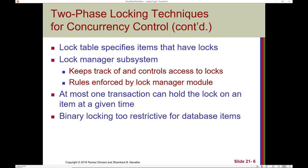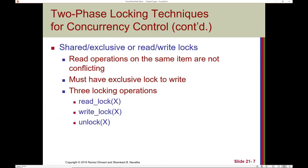Binary locking is too restrictive for database items, because if an item is locked it can't be accessed by anybody else. This is fine if we're trying to write new information to the database, but reading information shouldn't be an issue if multiple people need to read it at the same time. For example, if all cashiers need to scan an item to check the price, that shouldn't be a problem — but binary locking would make it one.